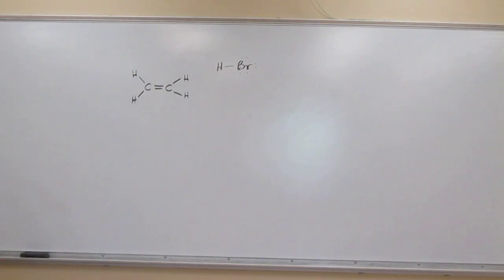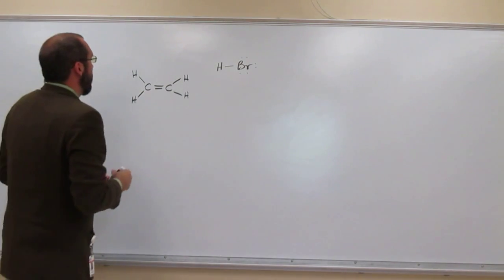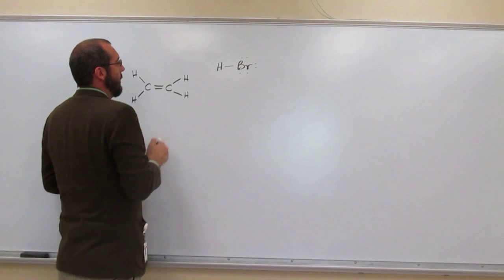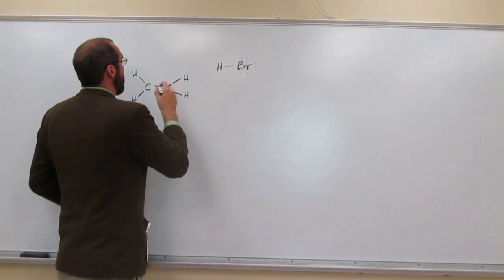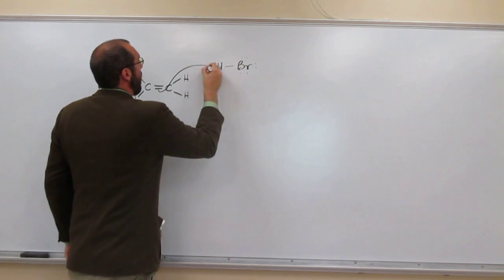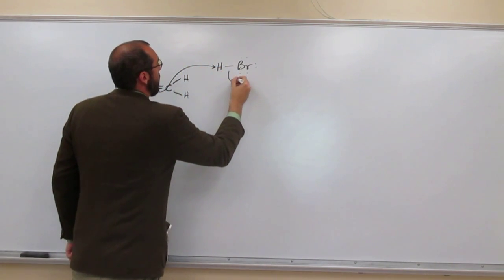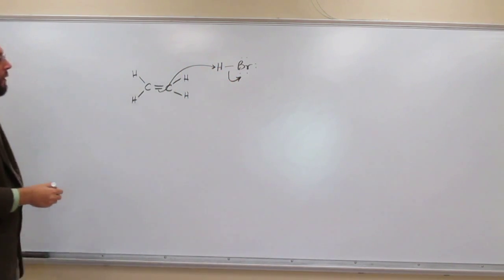So remember HBr is a strong acid so if we want the hydrogen to go to this carbon here remember the double bond is going to be the base. So that first set of arrows like that.